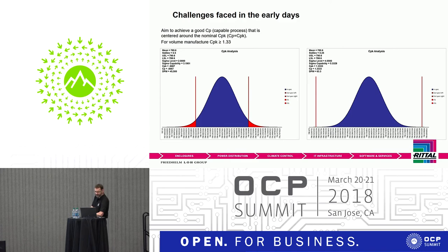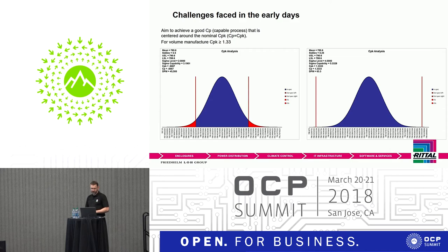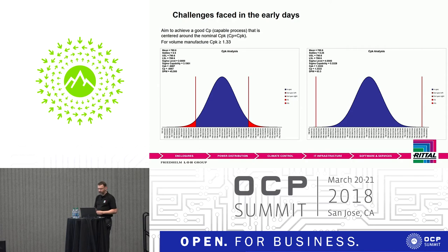With the upper and lower specification limits at 789.6 plus or minus 1mm, at a CP of 0.66 we are getting fallout on both the lower and upper limits. It's centrally distributed so CP equals CPK, but you are getting dropout outside the spec — giving a figure of approximately 45,500 defective parts per million, which equates to about 5%. That's not an acceptable level for production.